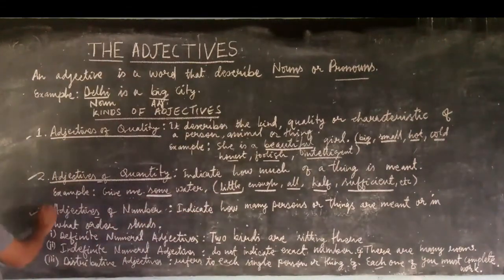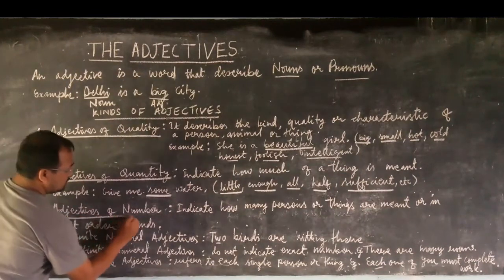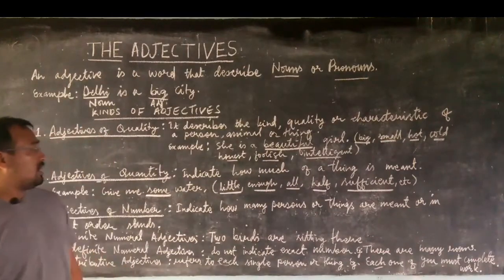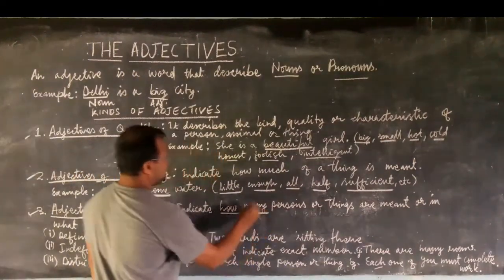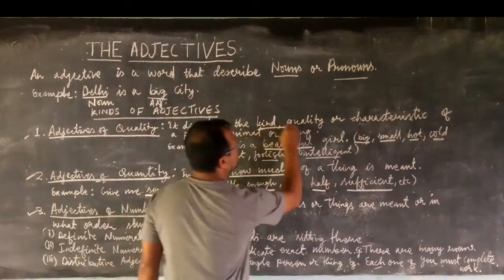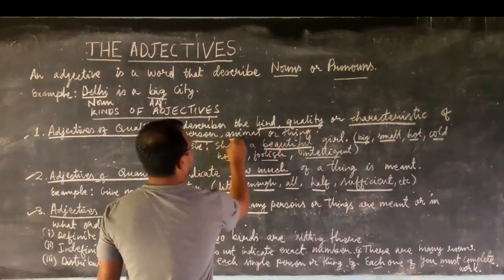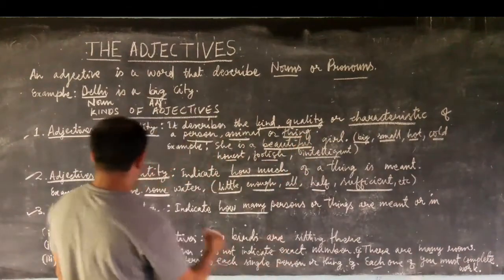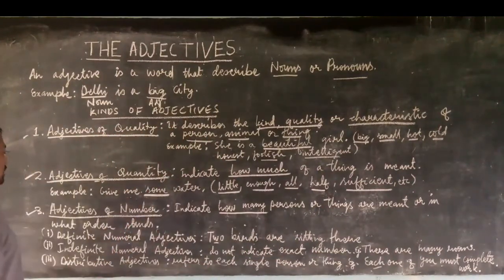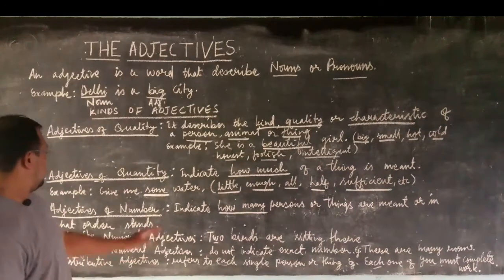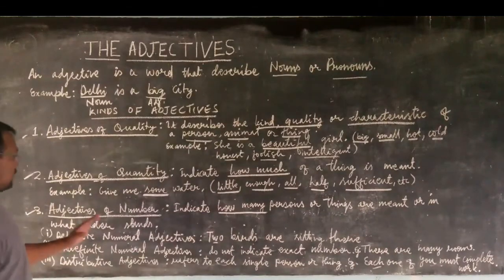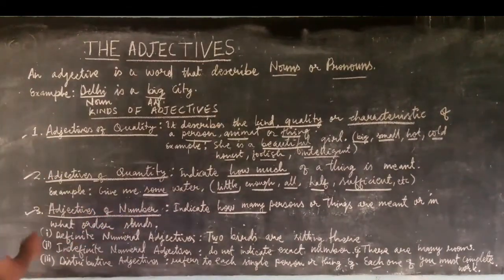The third type is the adjective of number. It indicates how many persons or things are meant, or in what order something stands. Because there are so many types of numbers, the adjective of number has been categorized into three sub-categories.